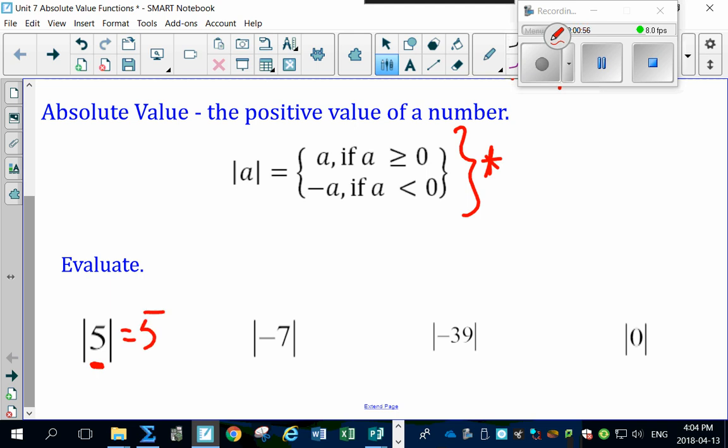So what is the Absolute Value of negative 7? Well, that's easy. That's 7. Well, then what's the Absolute Value of negative 39? Well, it's 39.